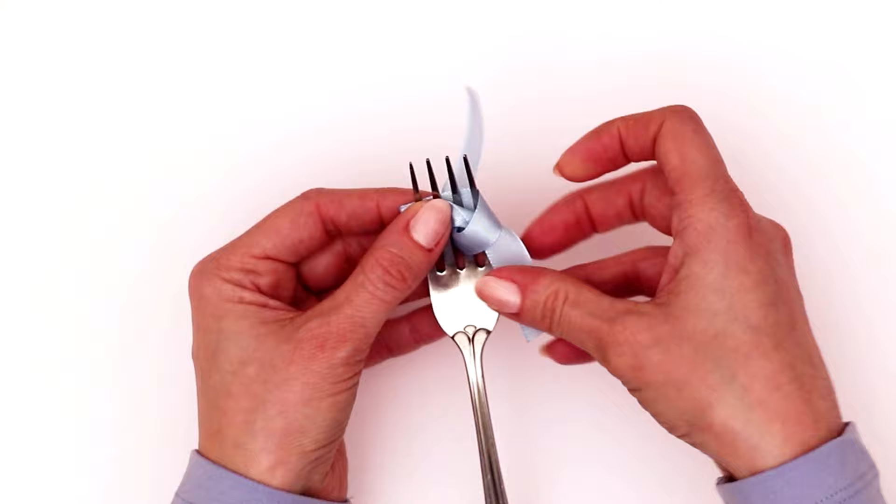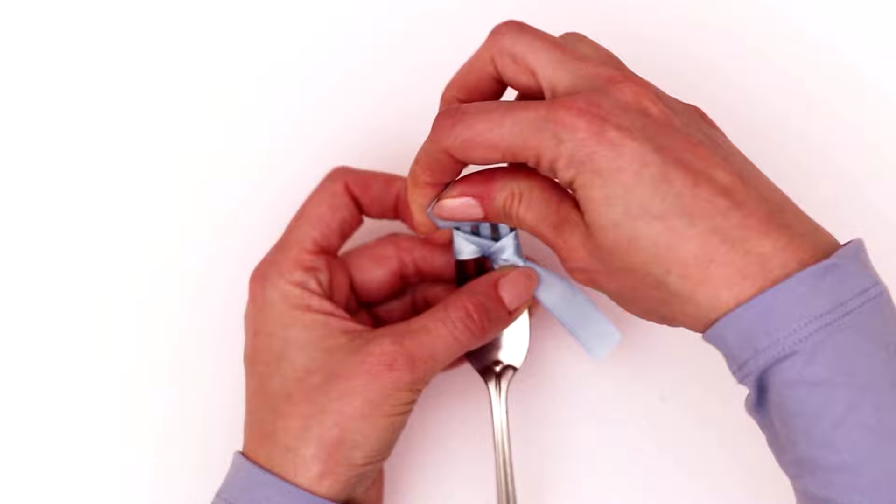And then you're going to pull that part because that needs to be our longer part. Pull that first, hold the other side, and go over and through that center tine again.